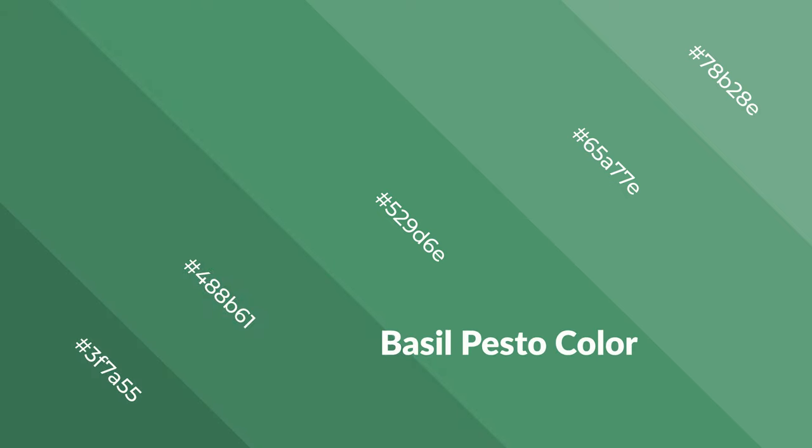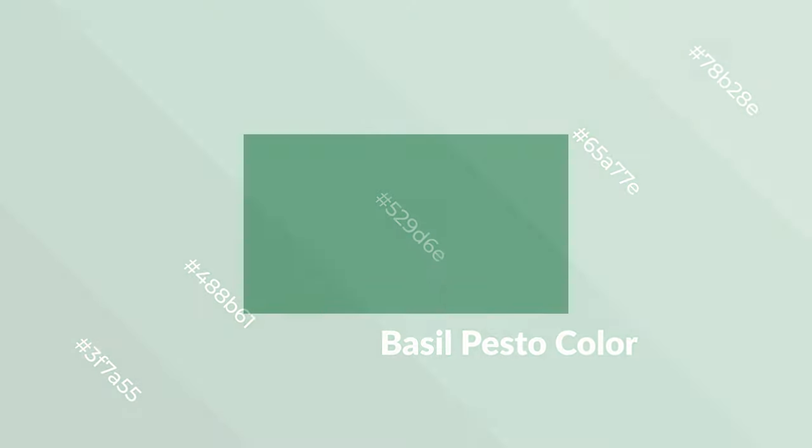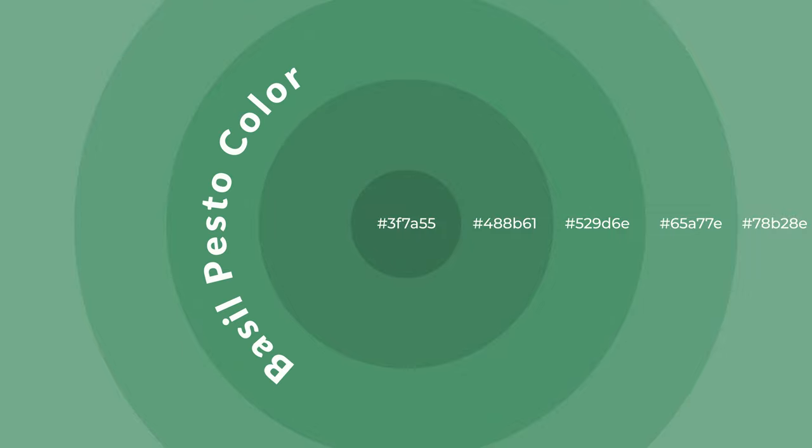Cool colors are like water, ice, sky, grass, soft, and snow. You can see them used in baby products.